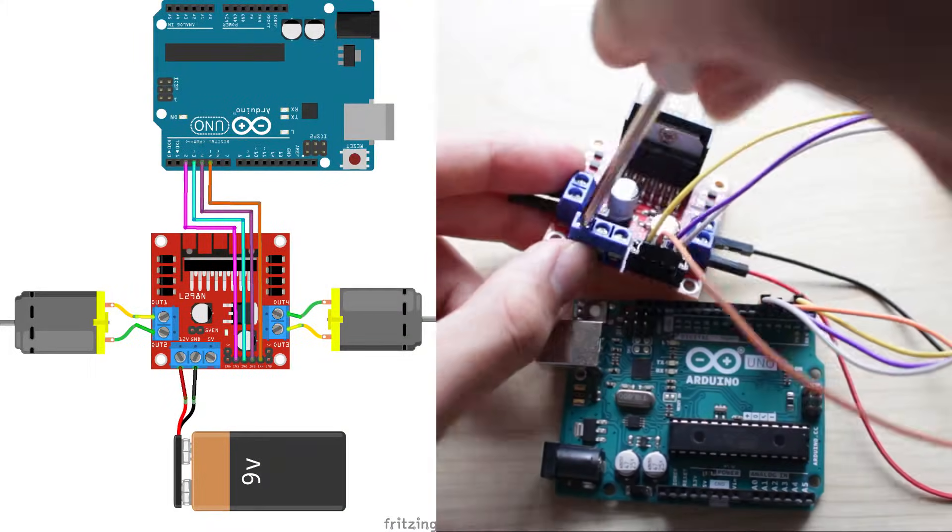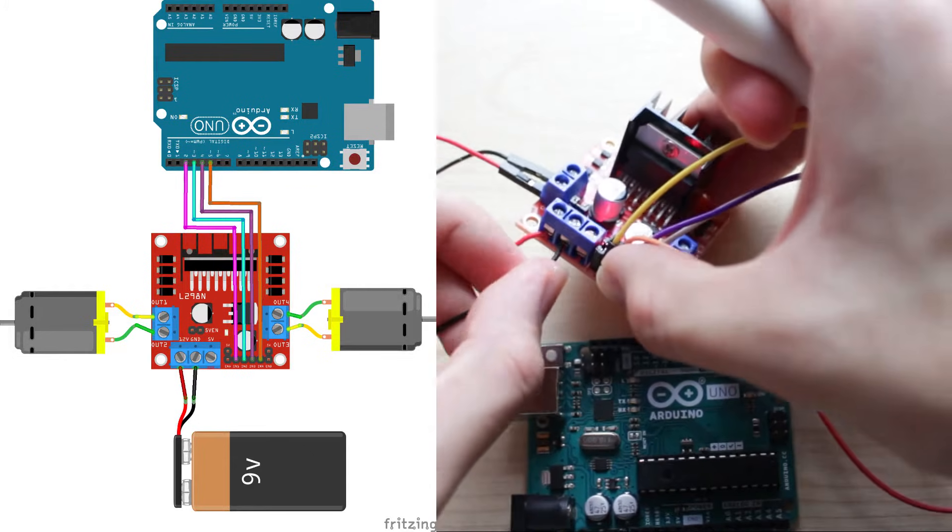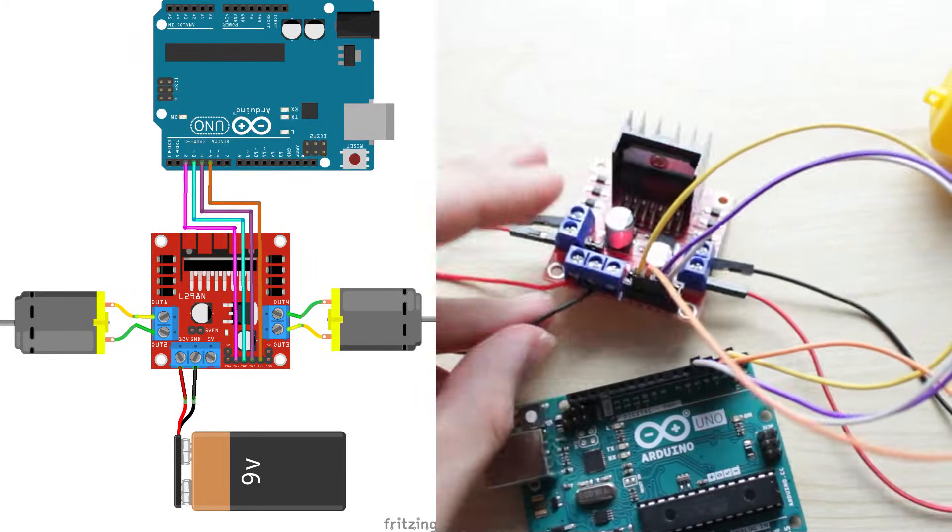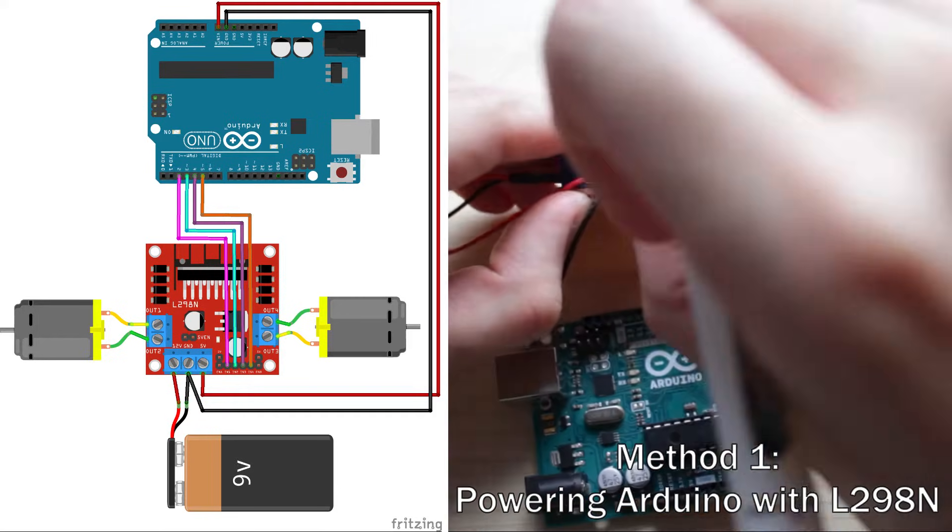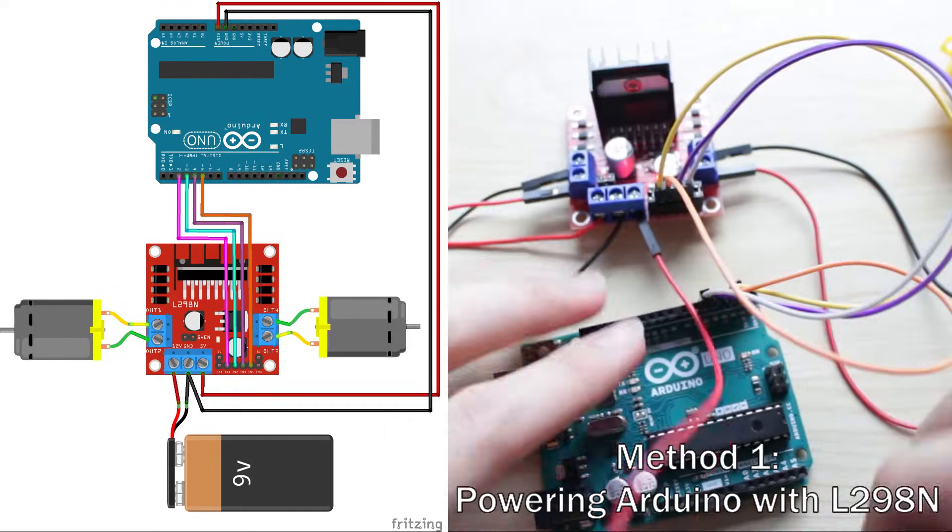You can power it with up to 12 volts by plugging your power supply into this screw terminal labeled 12 volts. There is a 5 volt output here that you can use to power the Arduino like so.